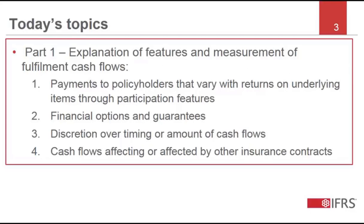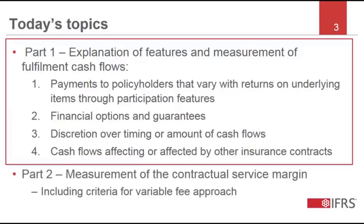The four features we'll be discussing today are: payments to policyholders that vary with returns on underlying items through participation features; financial options and guarantees; discretion over timing or amount of cash flows; and cash flows affecting other contracts. In part two, we'll move on to discuss the effect of these four features on the contractual service margin.